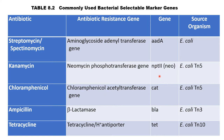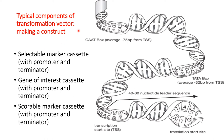Chloramphenicol acetyltransferase gene is represented as cat, sourced from E. coli Tn5. Ampicillin resistance is beta-lactamase, represented as bla, sourced from E. coli Tn3. Tetracycline resistance gene is represented as tet, sourced from E. coli Tn10.